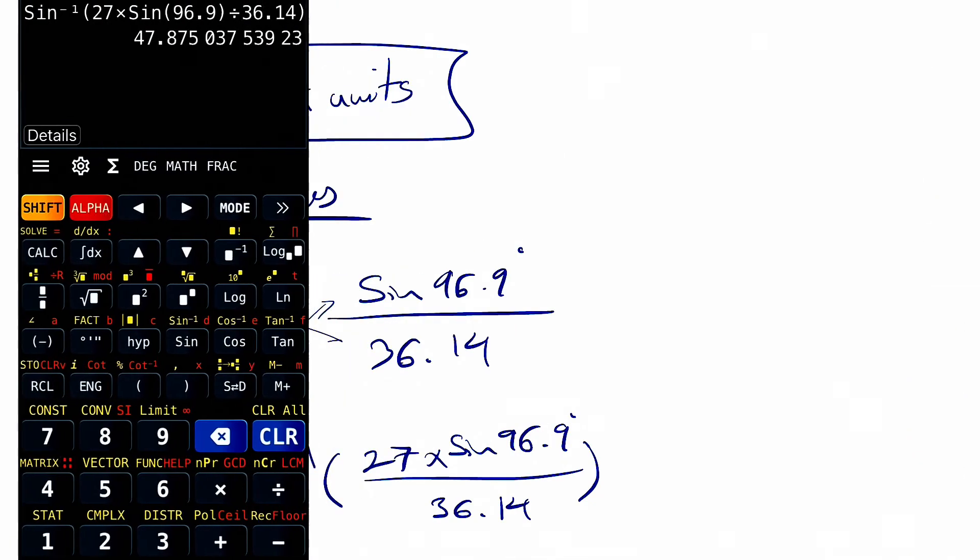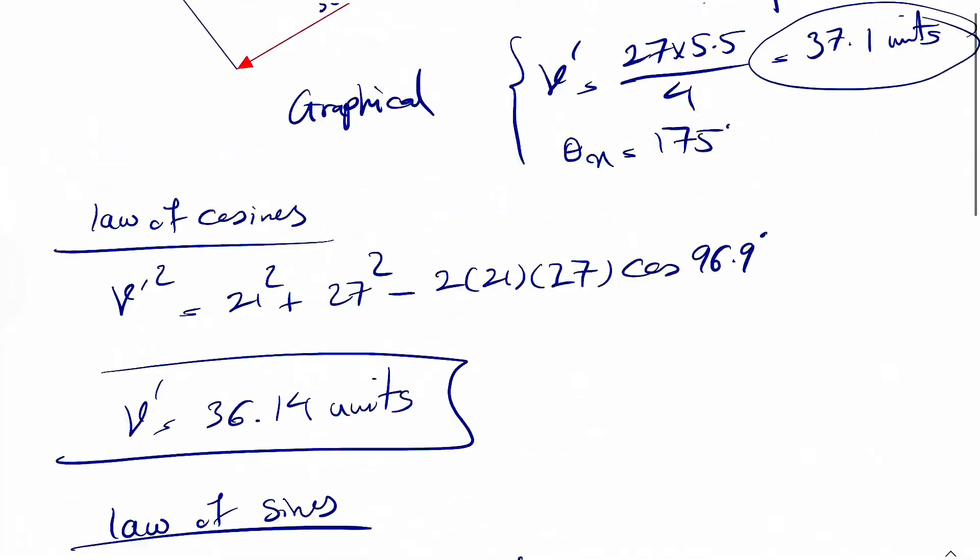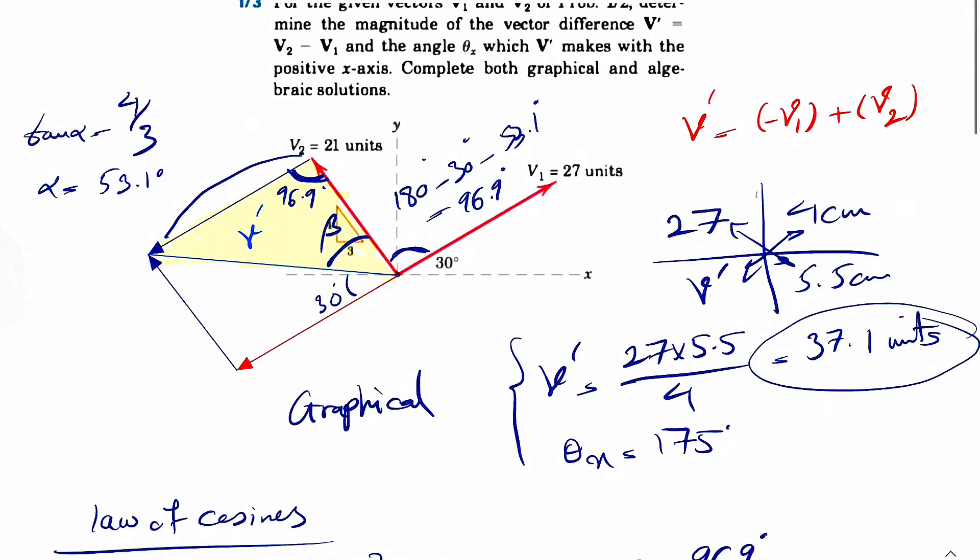But the question is asking for the angle between V prime and the positive x axis, which as I discussed in the graphical method, this angle, so it's basically beta plus 96.9 plus 30.